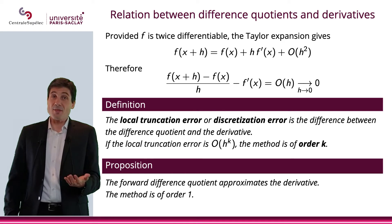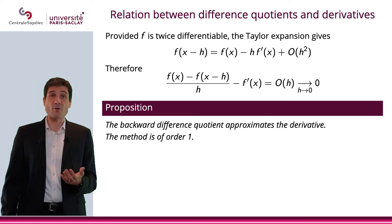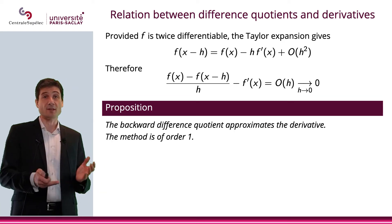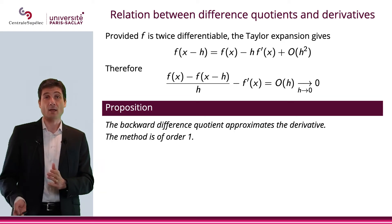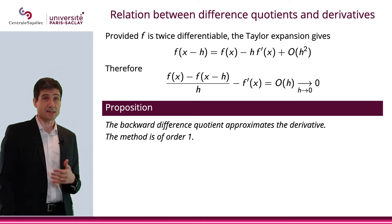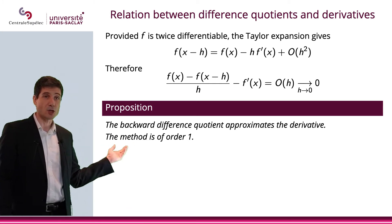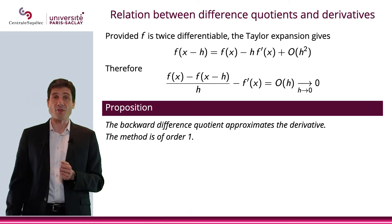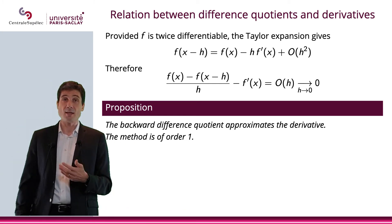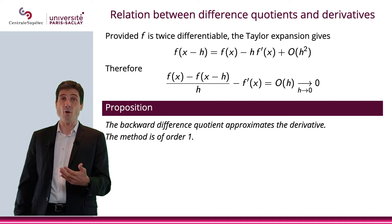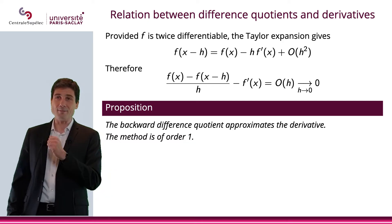The same thing can be said for the backward difference quotient. Basically, we just replace h by −h; it doesn't change much. The method is again of order 1.